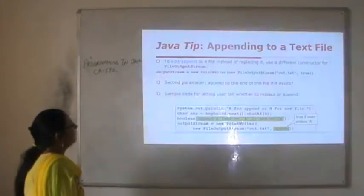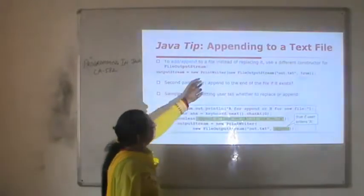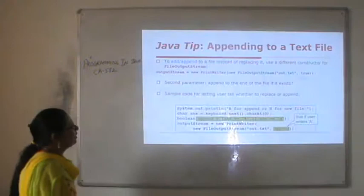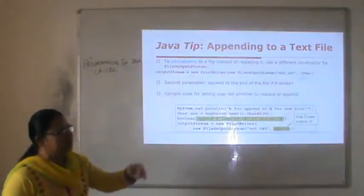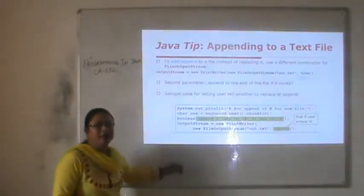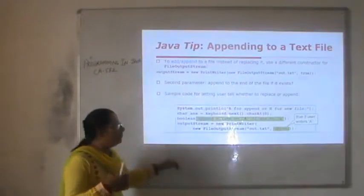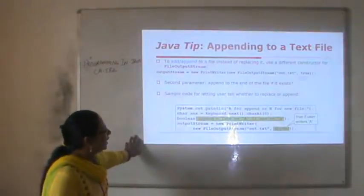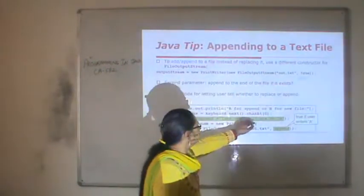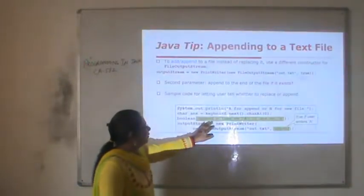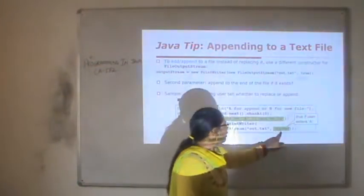How to append to a text file: to add or append to a text file so that previous data is not lost, pass a boolean value of true as the second parameter to the FileOutputStream constructor. This second parameter appends to the end of the file if it exists — the true value causes the pointer to move to the end of the file, so the new data is written at the end and appended to the previous data. A sample code shows how to let the user choose to replace or append.